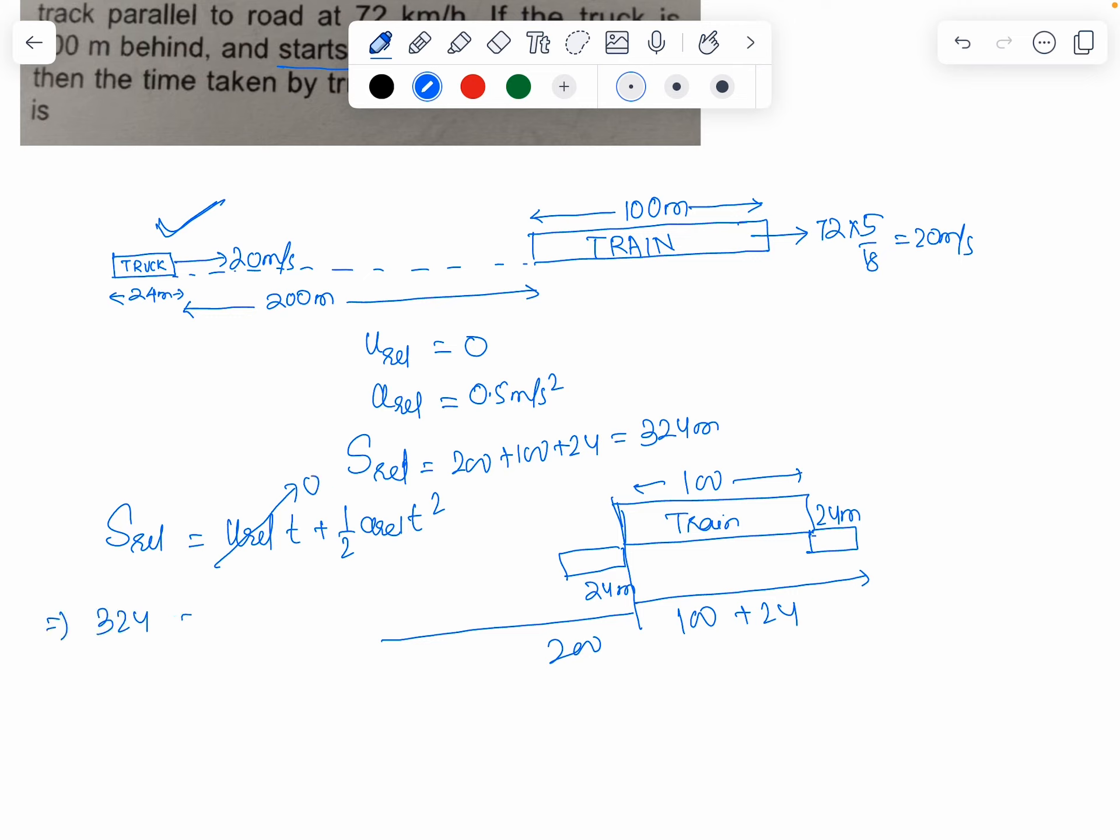So t squared equals 324 times 2 times 2, which is 324 times 4. Therefore, t equals the square root of that, which is 36 seconds.